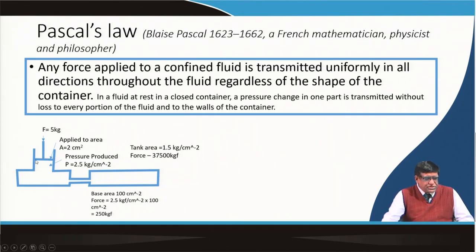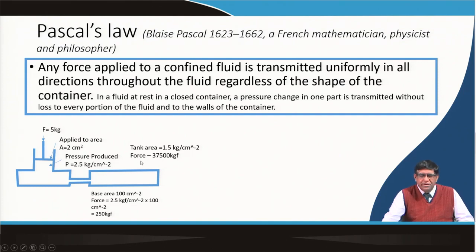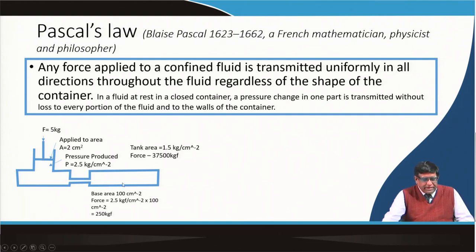For example, if the cross-sectional area here is 2 cm², then with a 5 kgf force it will generate a pressure of 5 kgf/cm². That same pressure will appear on the other side, so if the area on that portion is different, the available force will be different. If the area of the base plate is 100 cm², then you will get a force of 250 kgf — meaning from a 5 kgf input you get 250 kgf output.